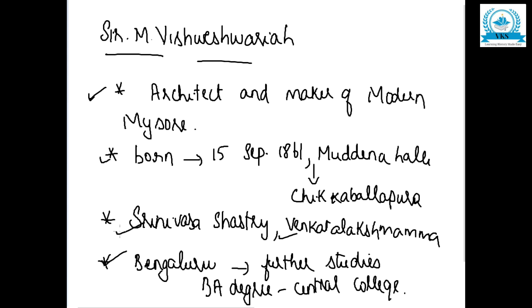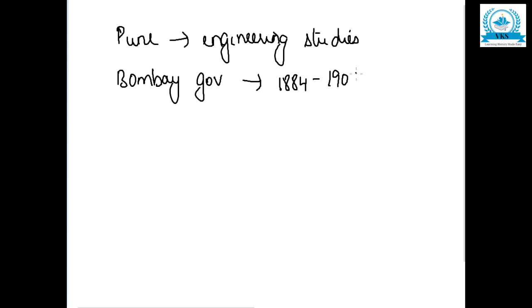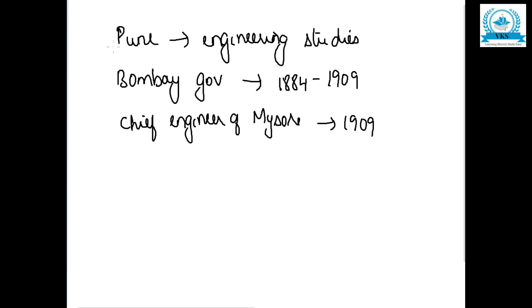After completing his BA degree from Central College, he moved to Pune for his engineering studies. After completing his engineering studies, he got a job under the Bombay government and served from 1884 to 1909. He was then appointed as the Chief Engineer of Mysore in 1909.